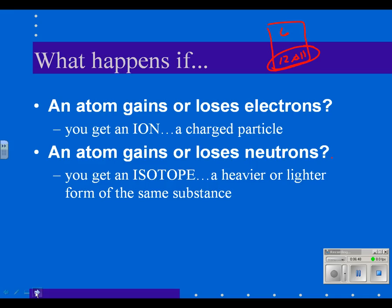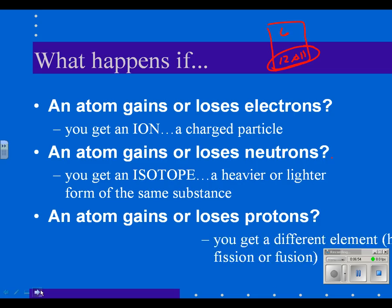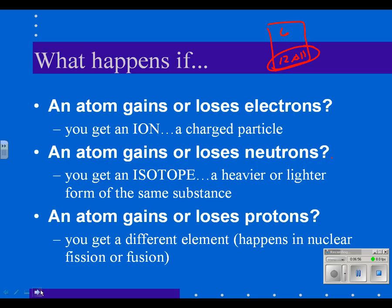If an atom gains or loses protons, then of course you have a different element. And this is what happens in an atomic bomb or in other forms of nuclear fission, which is where the nucleus is actually split and all kinds of energy is released.